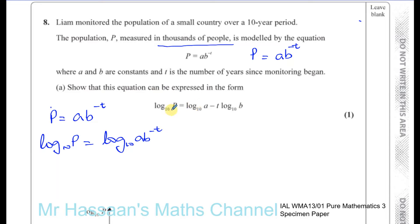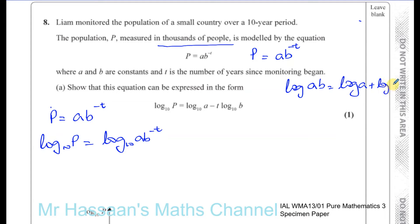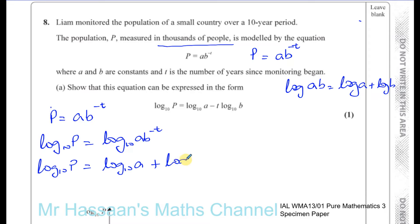Because it says 'show that', you have to be clear in your steps. The next step is to split this product up as a sum. From our laws of logarithms, the log of A times B equals the log to the same base of A plus the log to the same base of B. So this becomes log base 10 of P equals log base 10 of A plus log base 10 of B to the power of minus T.